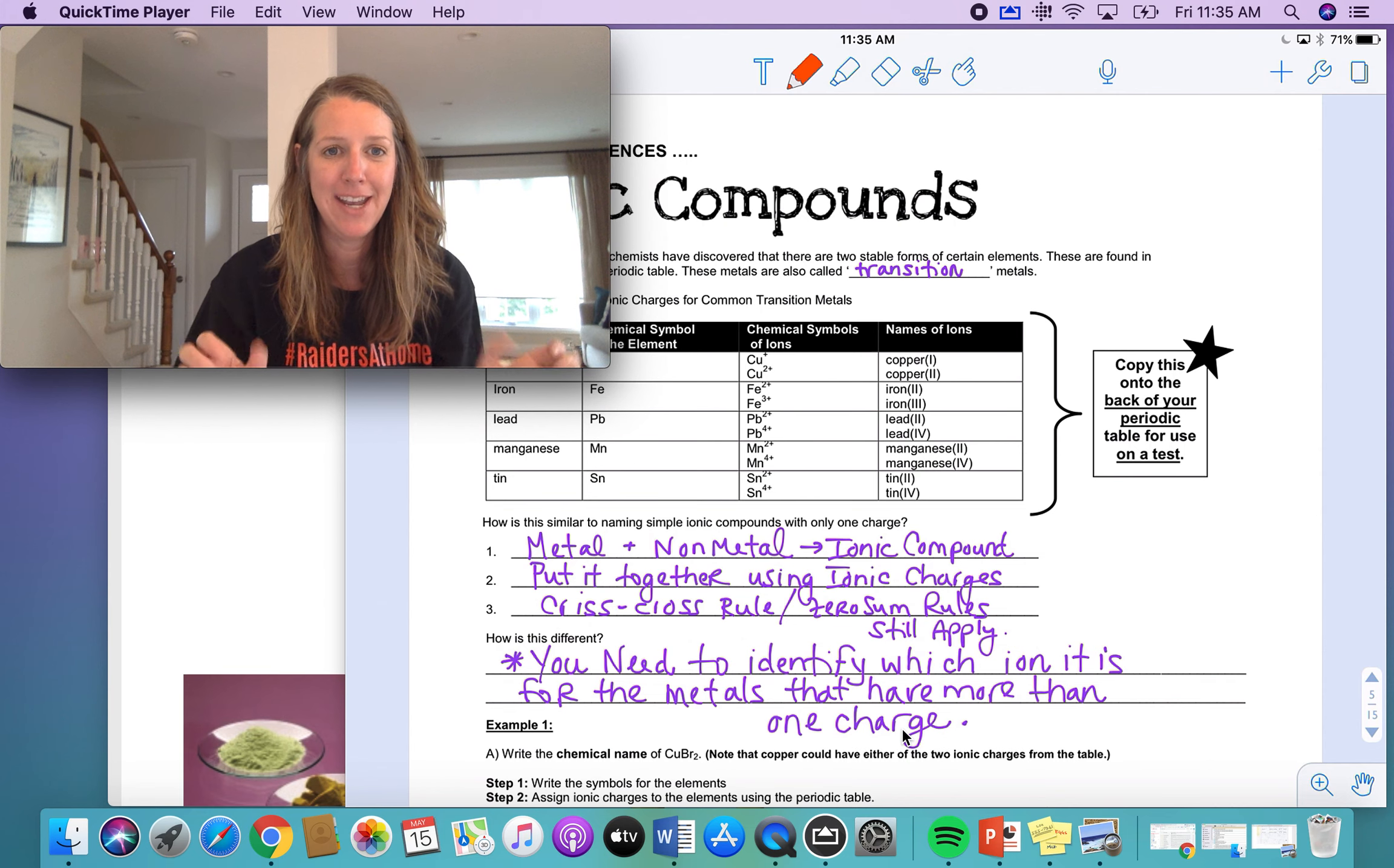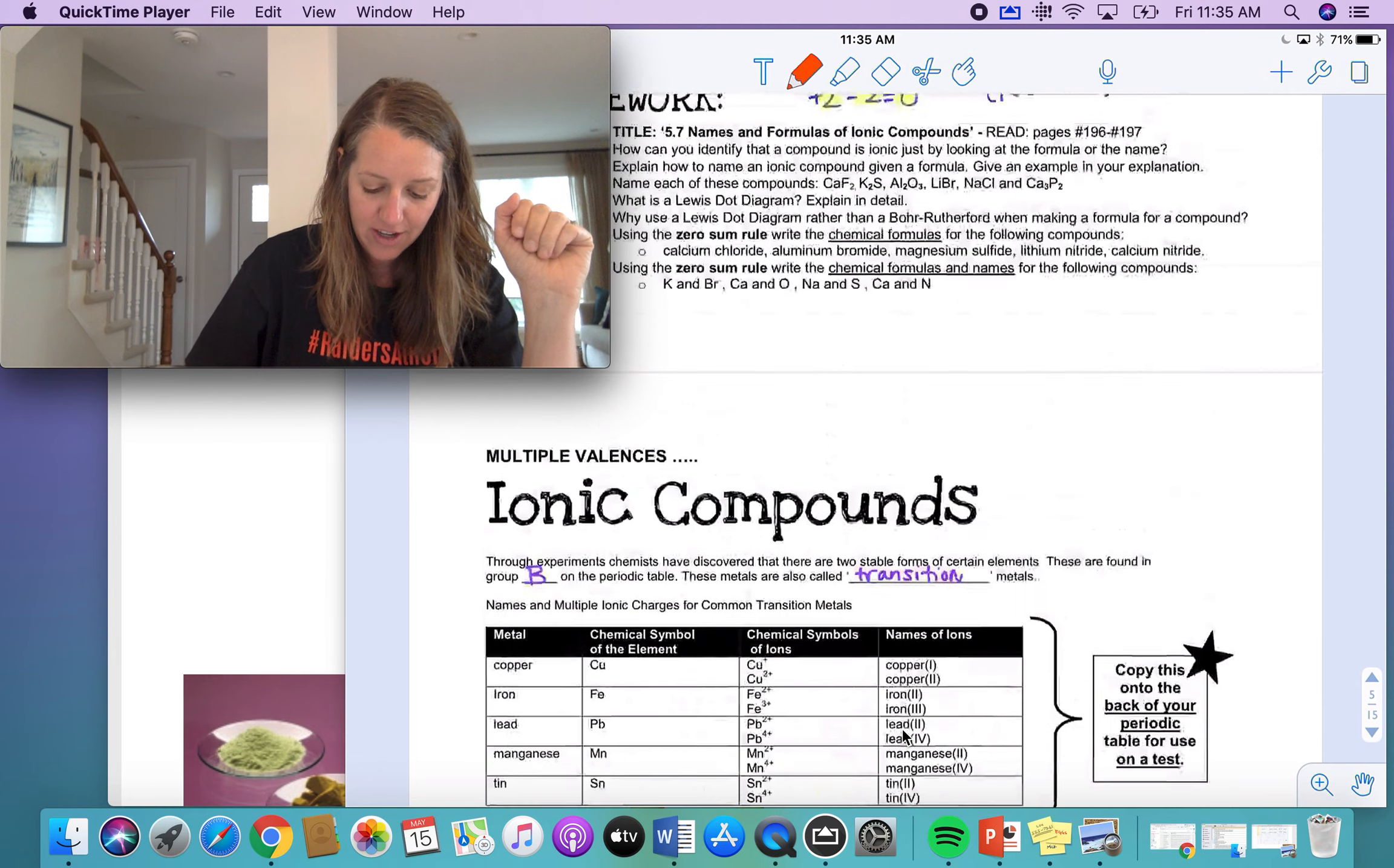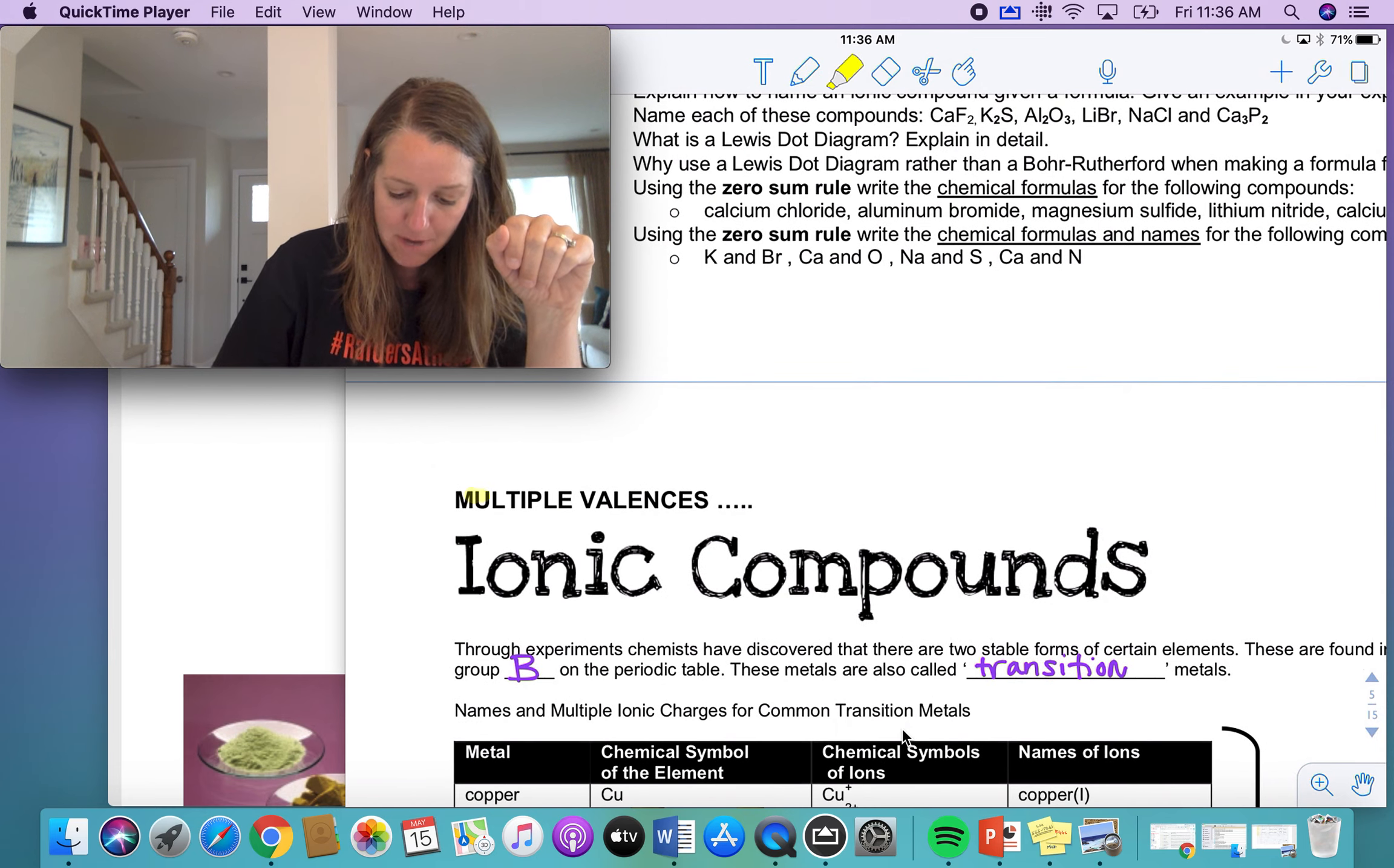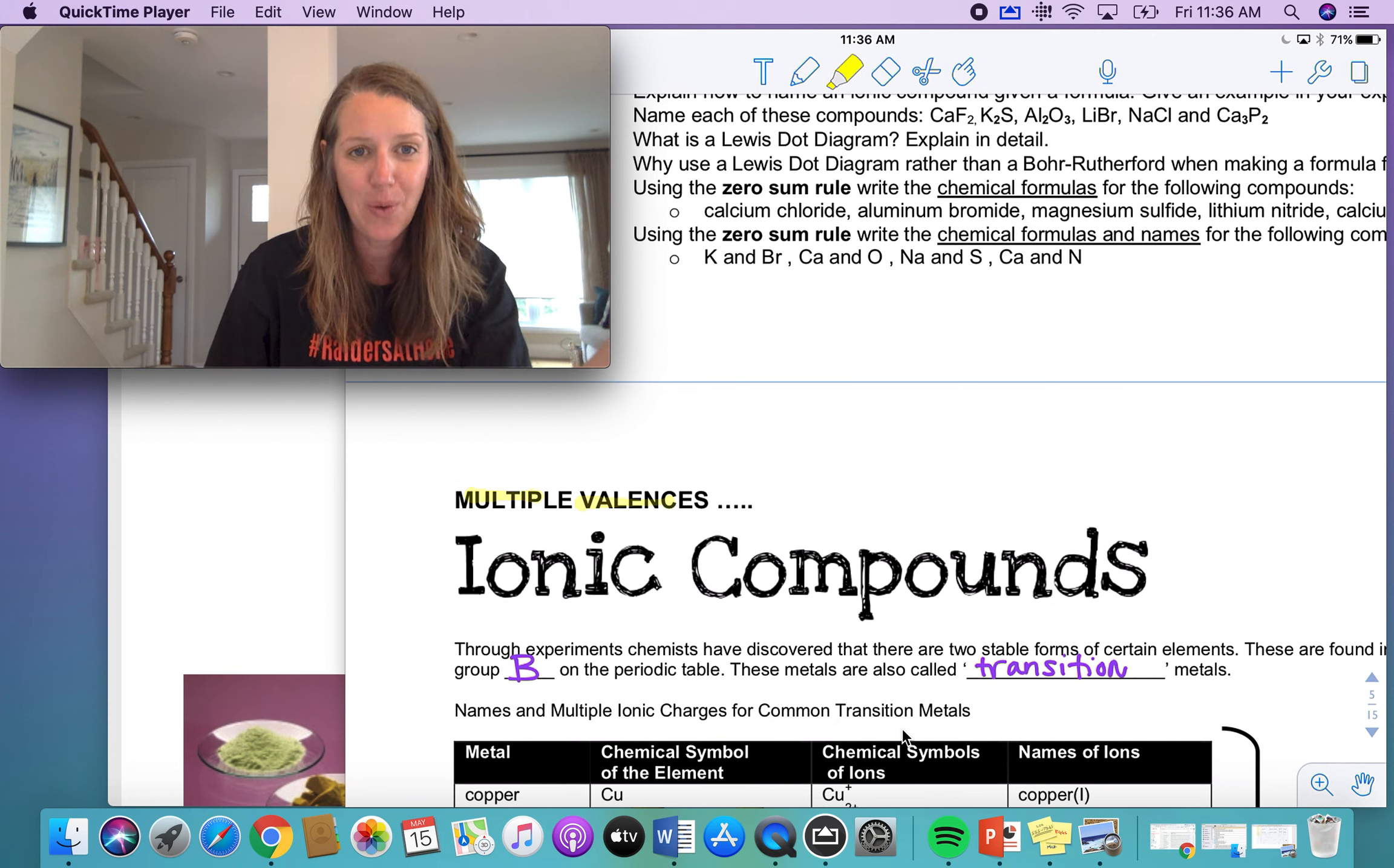Number two of our naming ionic compounds, and this is the one where we have ionic compounds where the metal is what we call multivalent. These are the transition metals. Sometimes they like to have more than one charge. It all depends on what they're going to be reacting with.